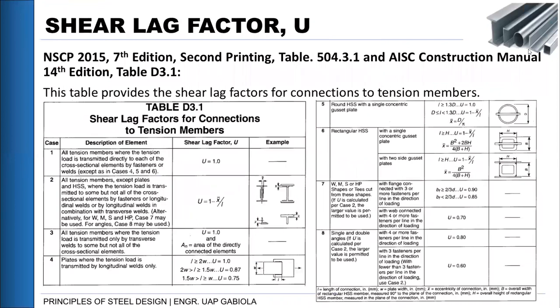The code provides a table for this — NSCP 2015 Table 504.3.1, which is the same as AISC Construction Manual Table D3.1. There are eight cases to consider, depending on the connection type. We need to discuss each case to understand which factor applies to our connection, because it is possible to fall under more than one case. We need to read the citations in the code carefully to understand how to select the value of U.